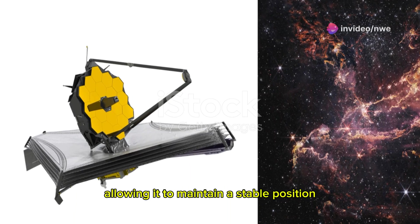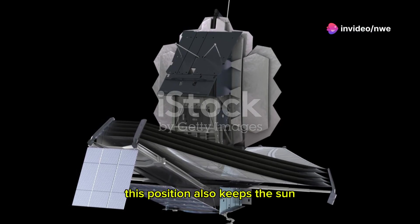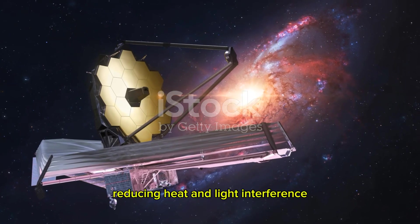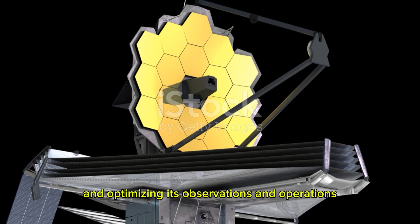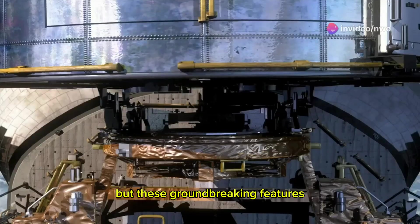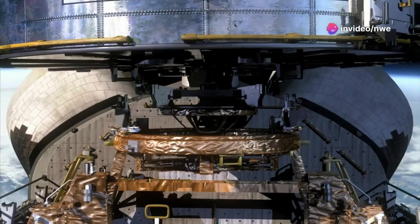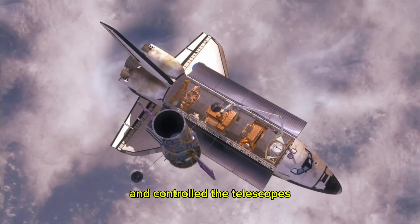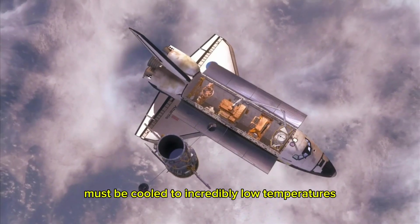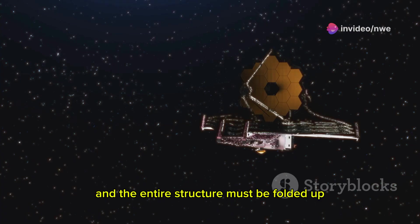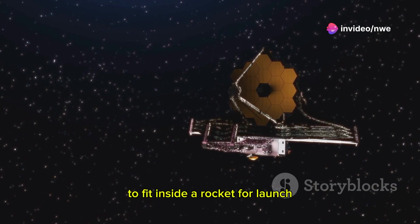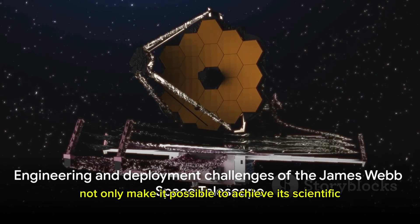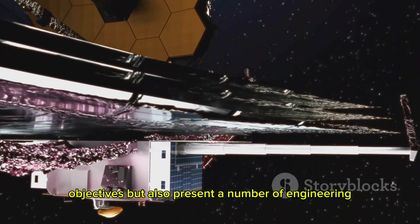This position also keeps the Sun, Earth, and Moon behind the telescope, reducing heat and light interference and optimizing its observations and operations. But these groundbreaking features don't come without challenges. Each of the mirror's 18 segments must be precisely aligned and controlled. The telescope's sensitive instruments must be cooled to incredibly low temperatures, and the entire structure must be folded up to fit inside a rocket for launch, then unfurl in space.